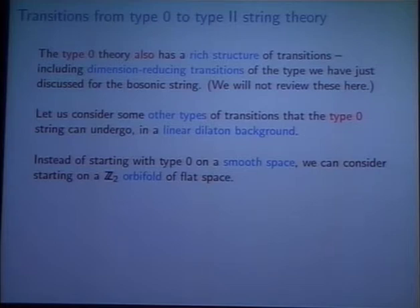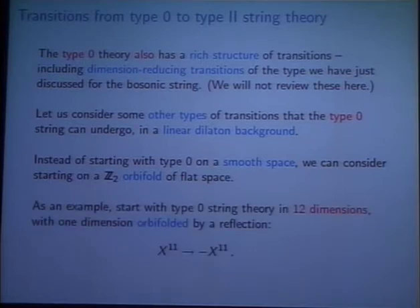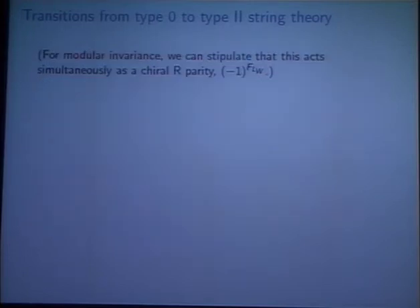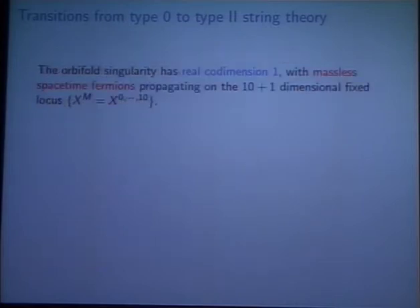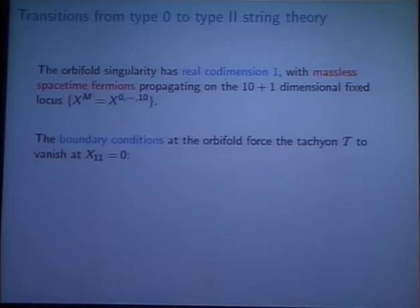Starting with type 0 as an example, instead of on a smooth space, let's consider starting on an orbifold, a particular type of orbifold. We'll start in 12 dimensions where one dimension is a Z₂ orbifold. The 12th dimension is a Z₂ orbifold by reflection. And then for modular invariance, we're forced to have this reflection also act as a chiral R parity, so minus 1 to the F left world sheet as well. The naive action is not modular invariant, but this action is. The orbifold symmetry acts on the world sheet fields this way: on the first 11 dimensions it acts trivially, on the 11th dimension it reflects, the left-moving supercurrent it reflects, and the right-moving supercurrent it doesn't. So the orbifold singularity has real co-dimension 1, and there are space-time fermions propagating on it. There are no fermions in the bulk - this is type 0, but there are space-time fermions on the orbifold fixed locus, and they're massless.